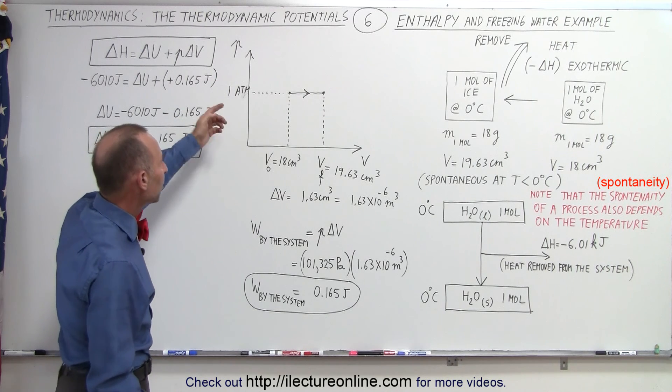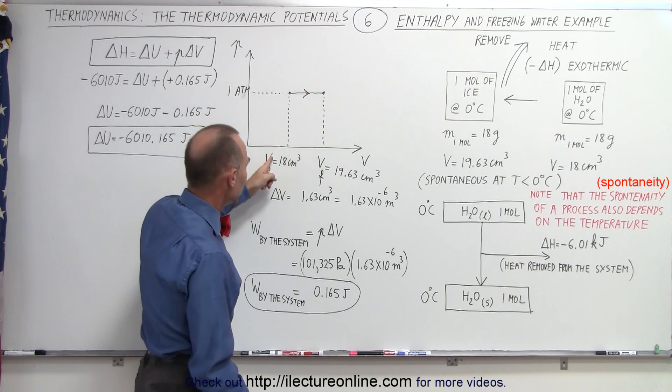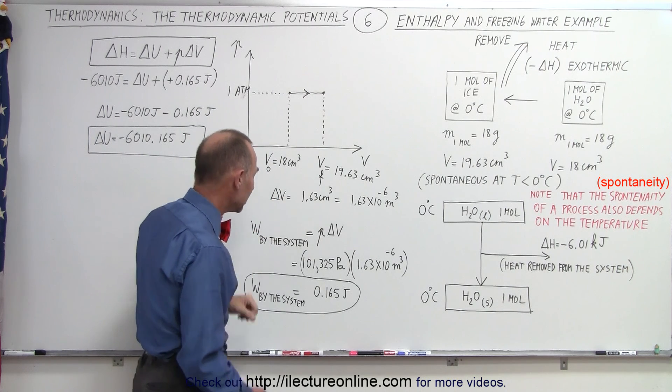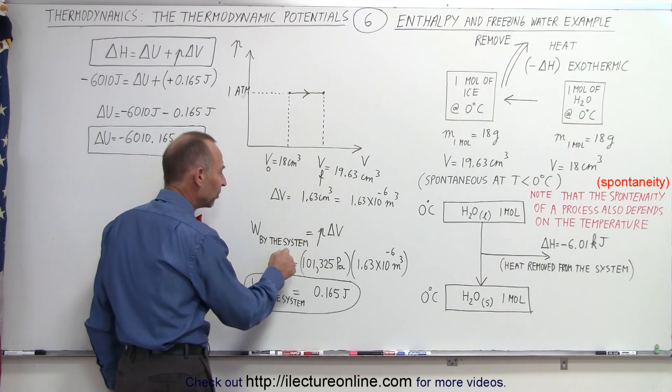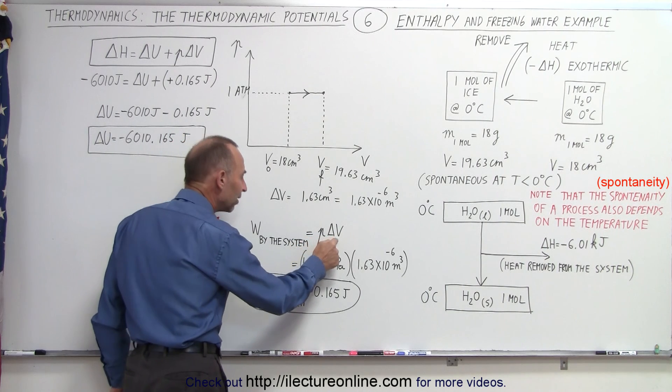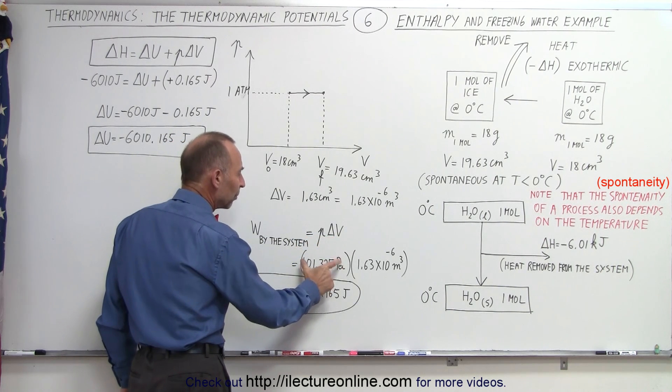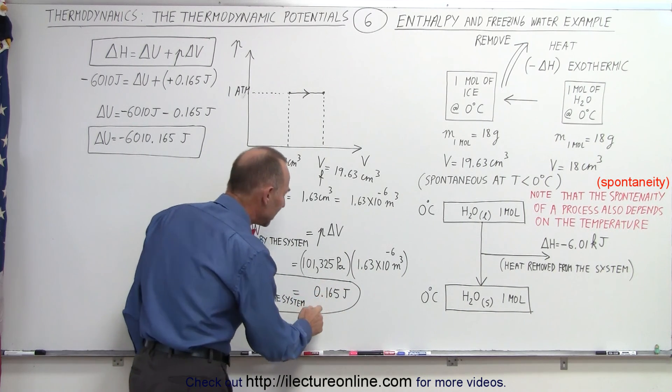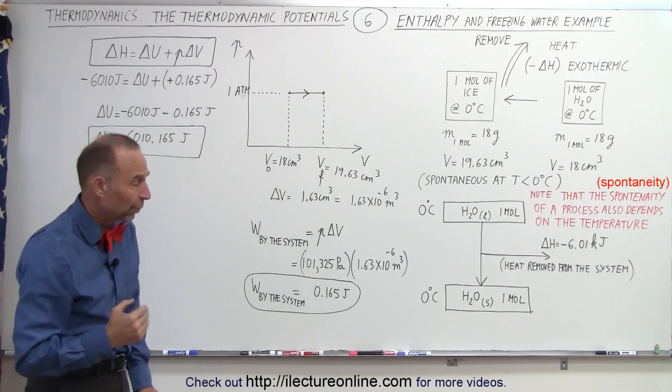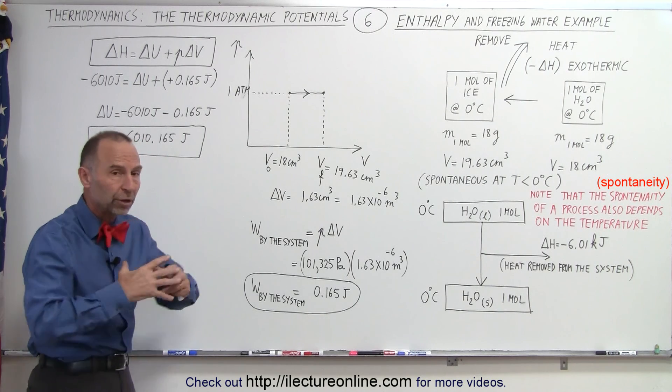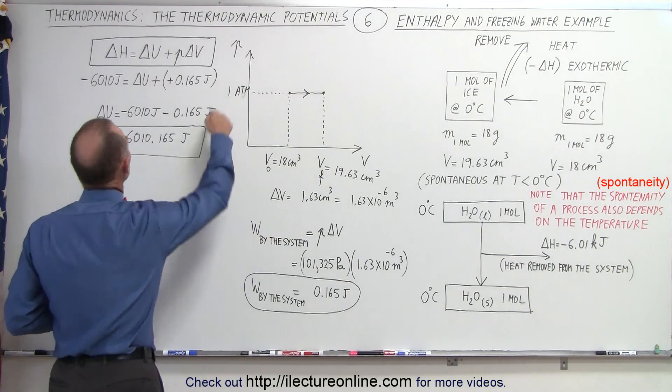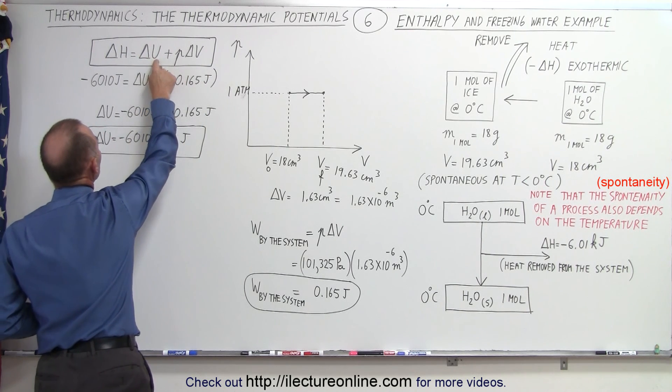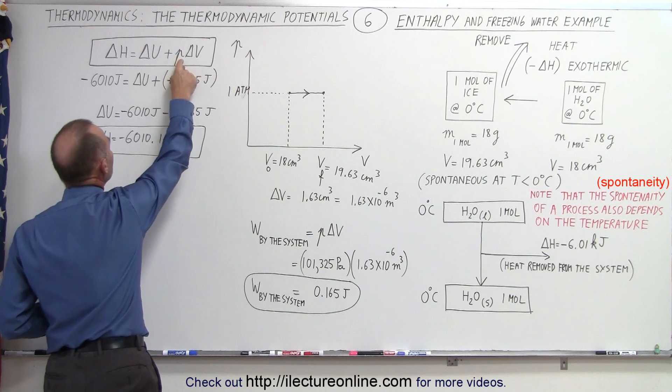Notice that in our PV diagram, we now go from left to right. That means the volume increases, the delta V is a positive quantity, and therefore the work done by the system is equal to P times delta V, and since P is the pressure of the atmosphere and delta V is now a positive quantity, it will now be a positive 0.165 joules of work done by the system.